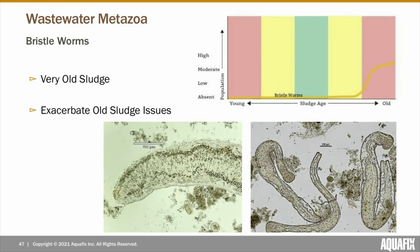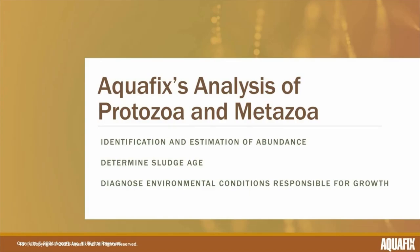Bristle worms are found in very old sludge ages and prefer high MLSS and low F to M conditions. They can be large enough to be seen with the naked eye, typically ranging from 300 micrometers to one centimeter. Bristle worms have been known to reduce MLSS levels by consuming bacteria. Unfortunately, they have a tendency to consume the younger and healthier bacteria, which exacerbates high sludge age related issues that may already be occurring. In our analysis, we identify and quantify the metazoa and protozoa present to help determine sludge age and diagnose any environmental conditions responsible for their growth.